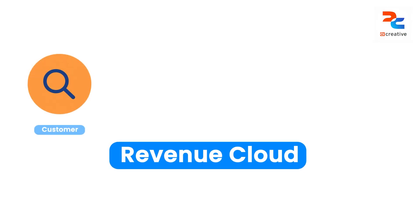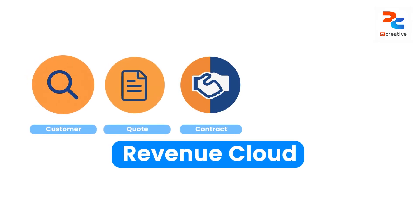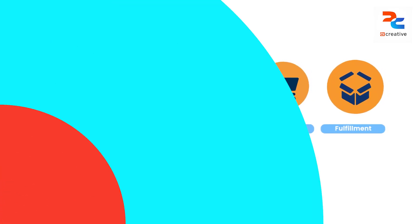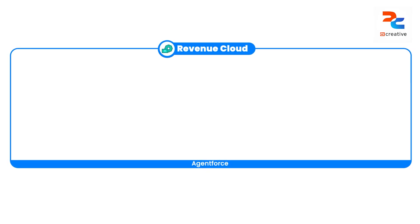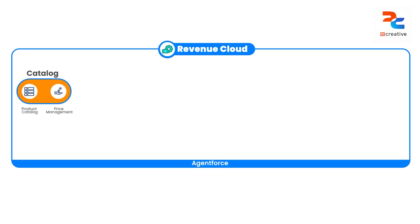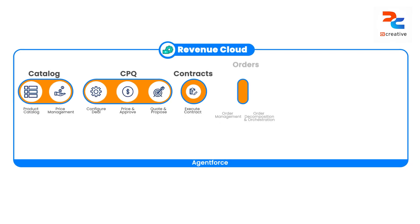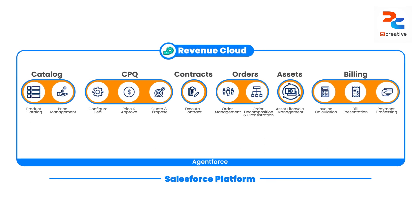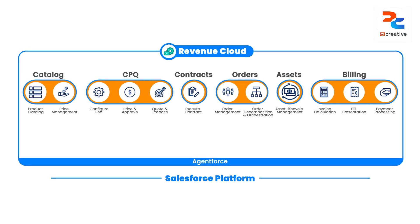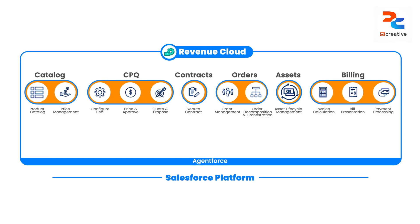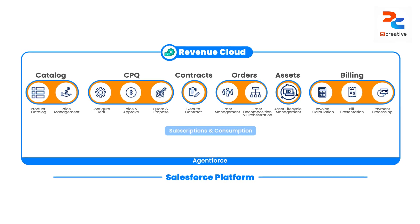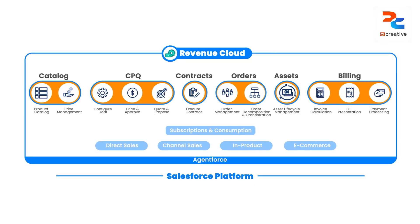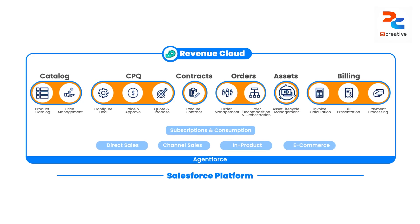To summarize in layman's terms: we have a customer, we send a quote, a contract is signed, an order is fulfilled — all under one umbrella. In technical terms, Revenue Cloud contains these major components: catalog, CPQ, contracts, orders, assets, and billing. It's all built on the Salesforce platform itself as core functionality. Apart from these components, it includes a subscription and consumption model, and other clouds that pre-exist. If you have experience of Salesforce Industries, you'll know Omni Studio is also part of the Revenue Cloud package.